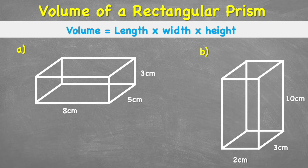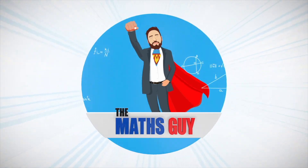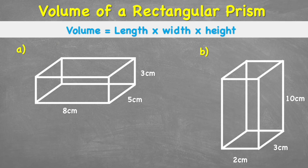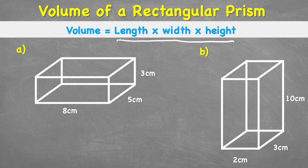Welcome back to the Maths Guide. Today we are looking at how to work out the volume of a rectangular prism. A rectangular prism is a 3D shape with six faces which are all rectangles. The volume is the amount of space it takes up. The formula is length times width times height, and because multiplication is commutative, it does not matter which order we do the calculation.